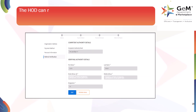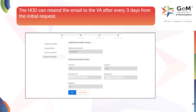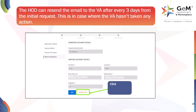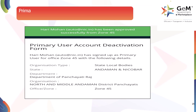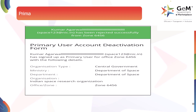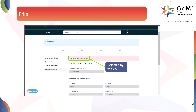The HOD can resend the email to the VA after every 3 days from the initial request, in case the VA hasn't taken any action. Click here to send the email again. The primary user will receive an email once the VA approves the request. The primary user gets this email if the VA rejects the request.